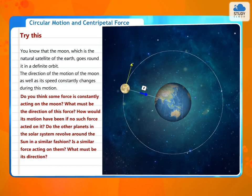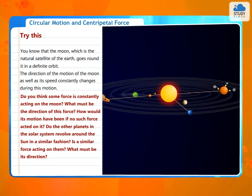Do you think some force is constantly acting on the moon? What must be the direction of this force? How would its motion have been if no such force acted on it? Do the other planets in the solar system revolve around the sun in a similar fashion? Is a similar force acting on them? What must be its direction?